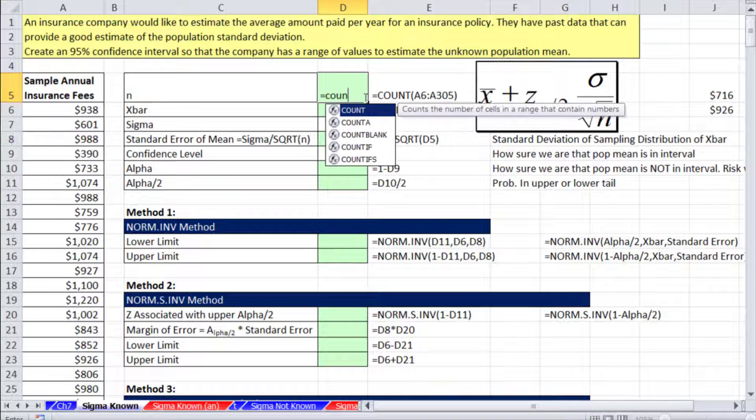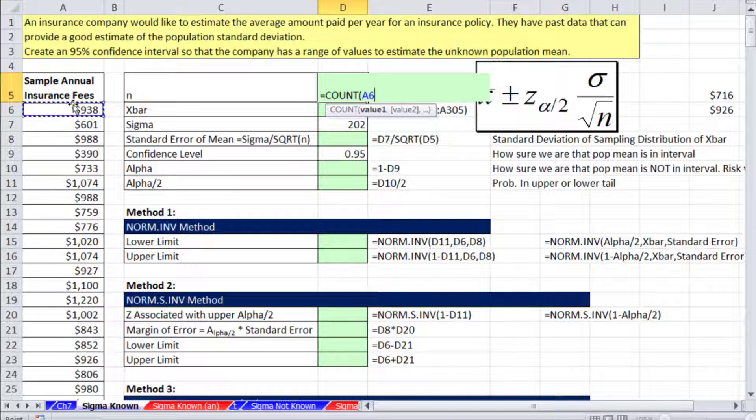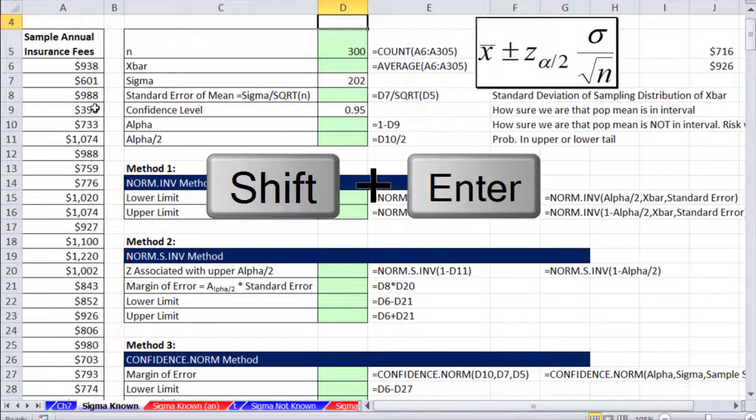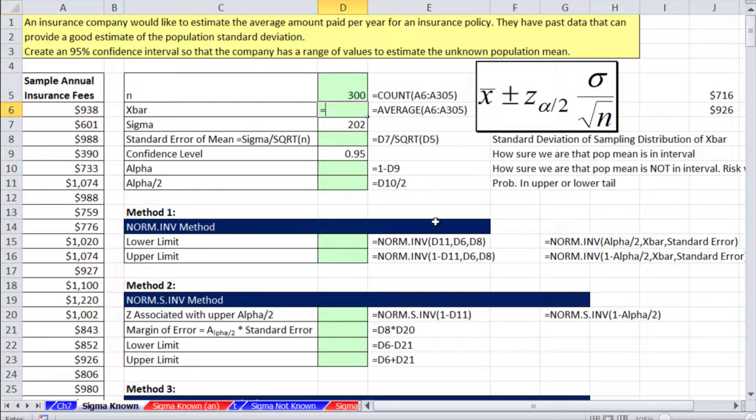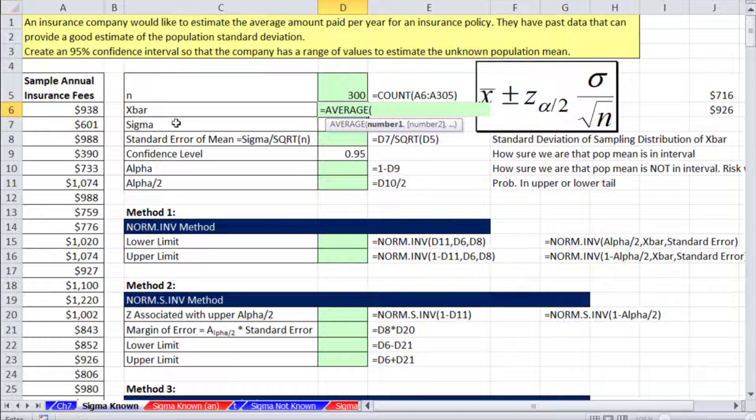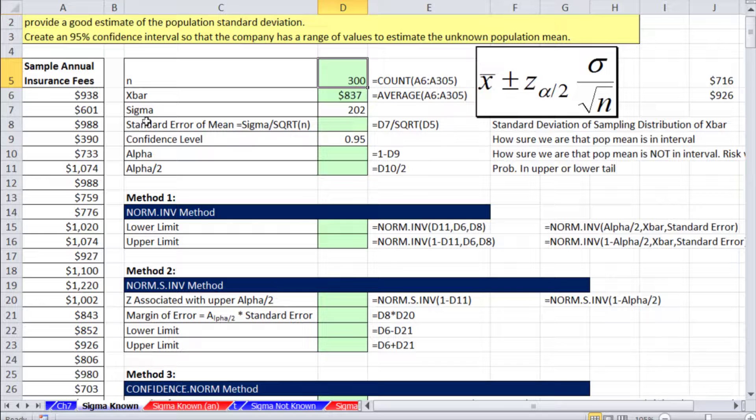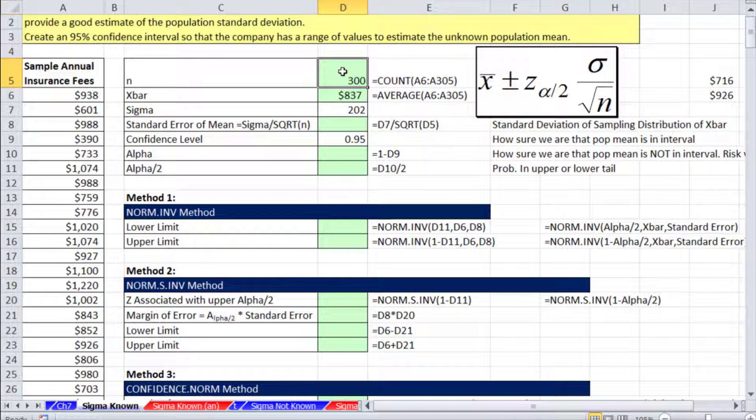We use the COUNT function. COUNT is great because it can count numbers. Control, Shift, Down Arrow, and then Shift, Enter. Now, x̄, we're going to use AVERAGE. Control, Shift, Down Arrow, Shift, Enter. So we have our x̄ and our n from sample data.